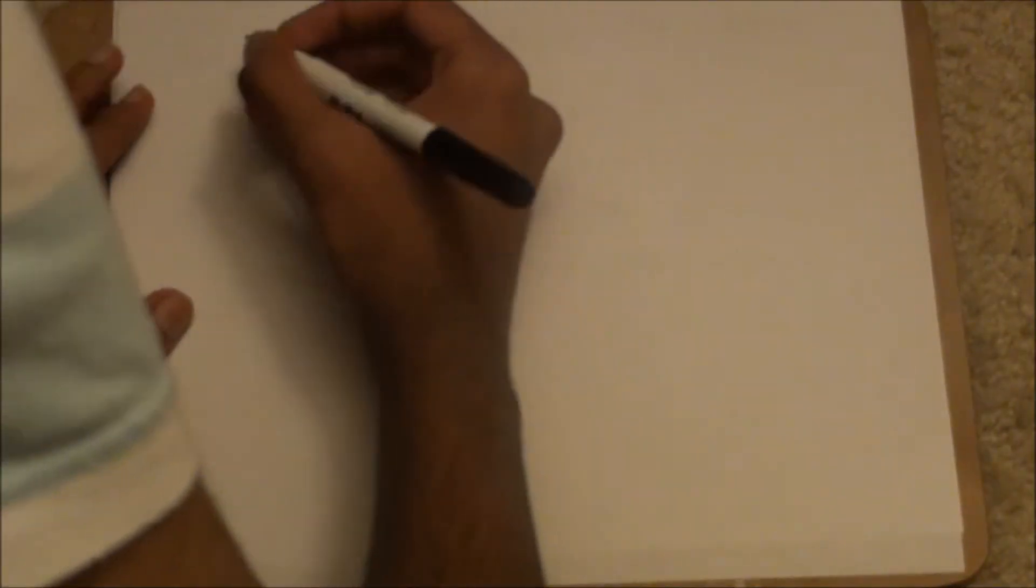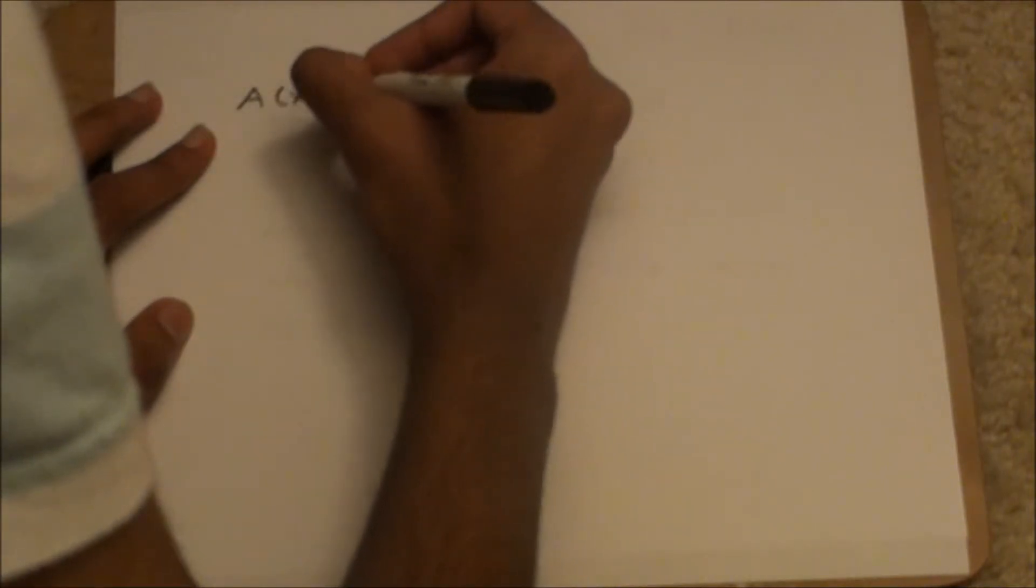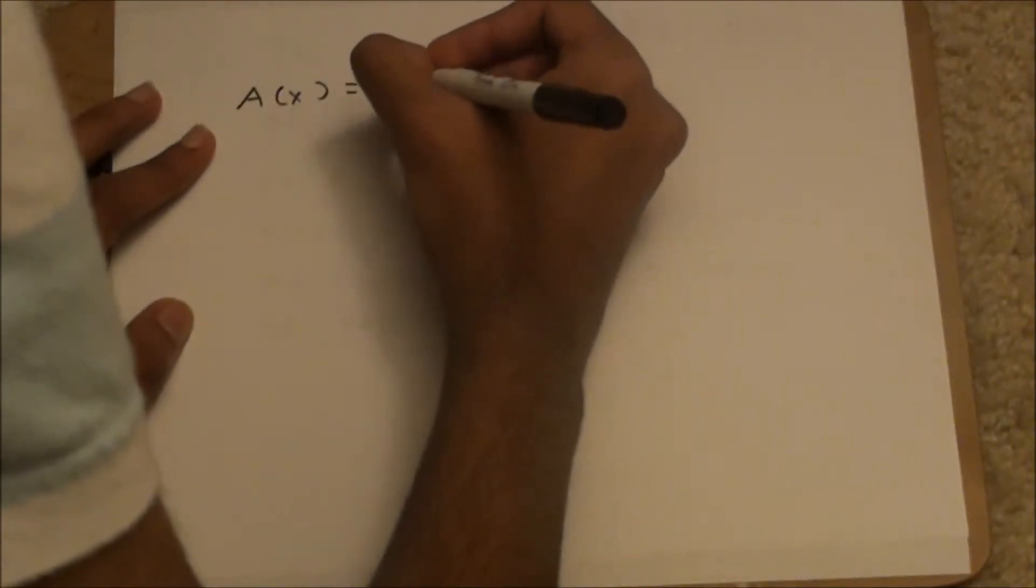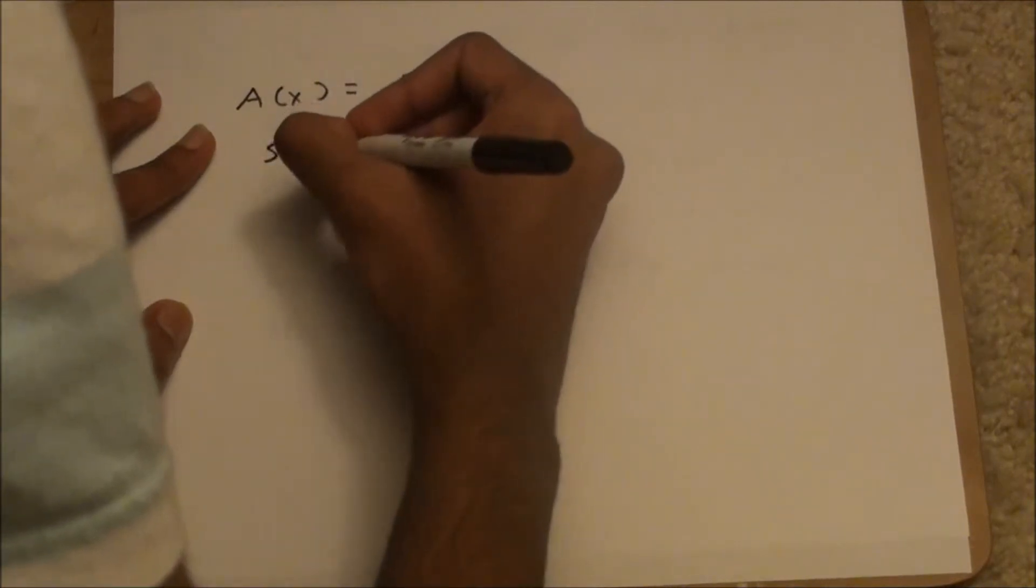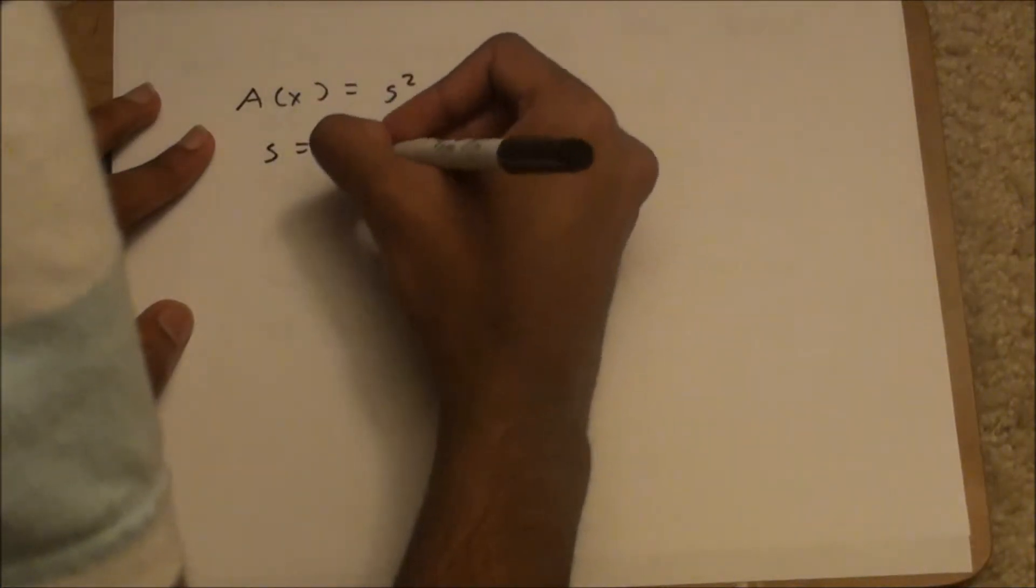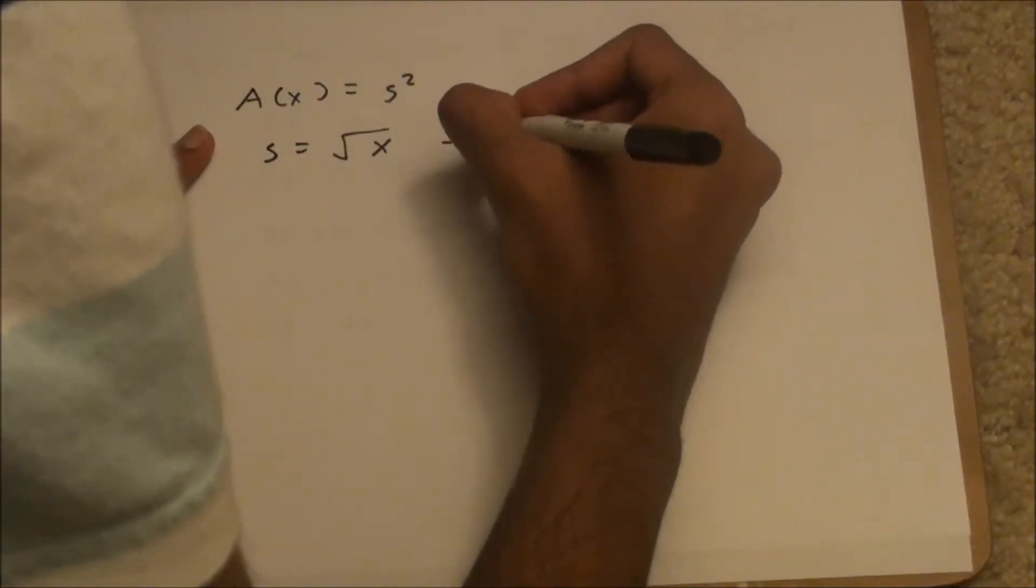So basically, to start this problem, we know the area of a square, the area function is s squared. And in this case, the side equals what I mentioned earlier, the square root of x minus x over 2.